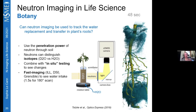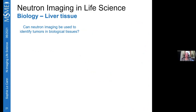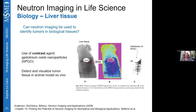Another biological application is in liver tissue, where researchers investigated whether neutron imaging can identify tumors. Since the tumor itself offers little contrast against surrounding tissue, nanoparticles that are highly absorbent to neutrons were used as contrast agents. These nanoparticles attach to tumor tissue, enabling detection of the tumor by highlighting regions with higher neutron absorption — a method that could also serve therapeutic purposes.